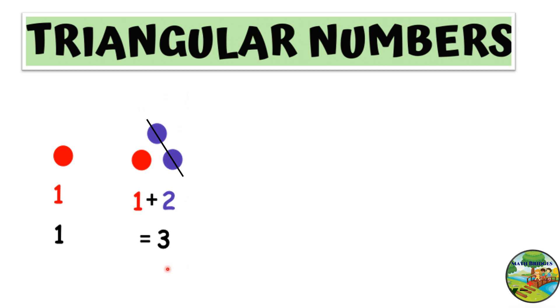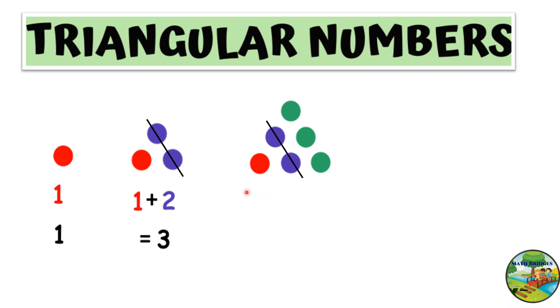Now we will take 3 as the base, that means 3 dots as base, next to 2 and 1. You observe 1 red dot, 2 blue dots, and 3 green. That means 1 plus 2 plus 3, which equals 6.